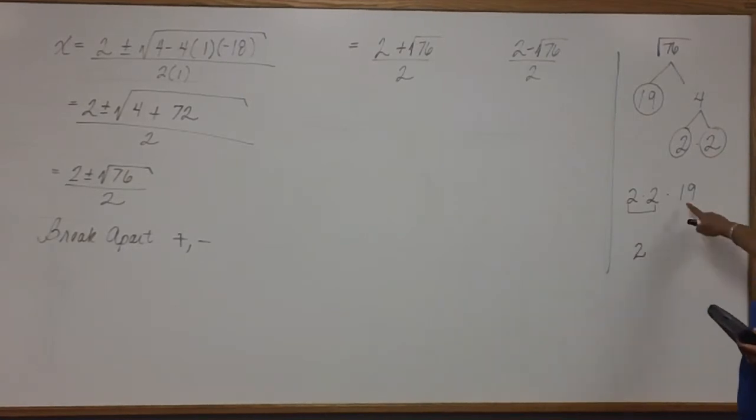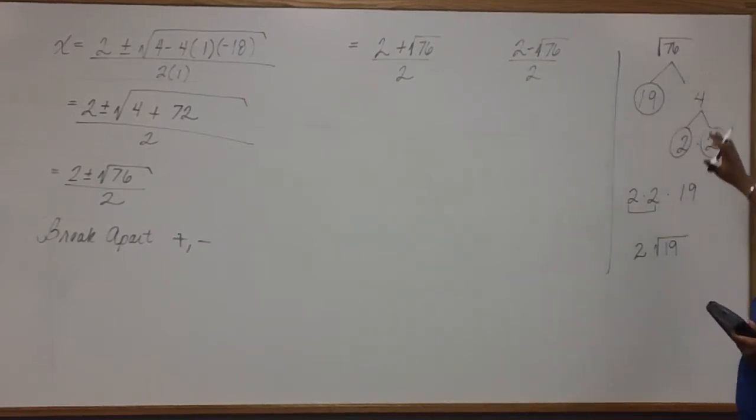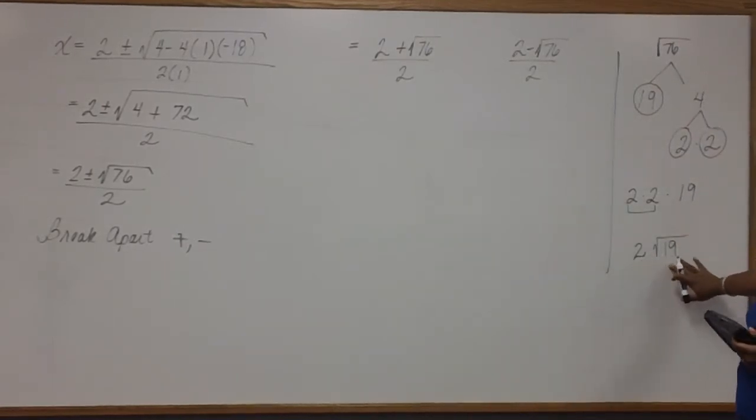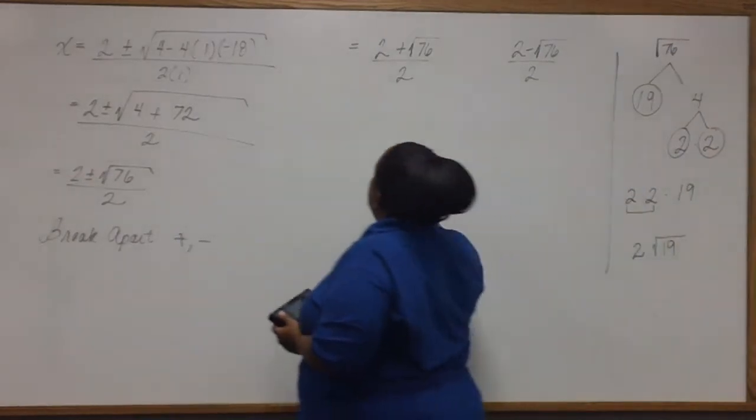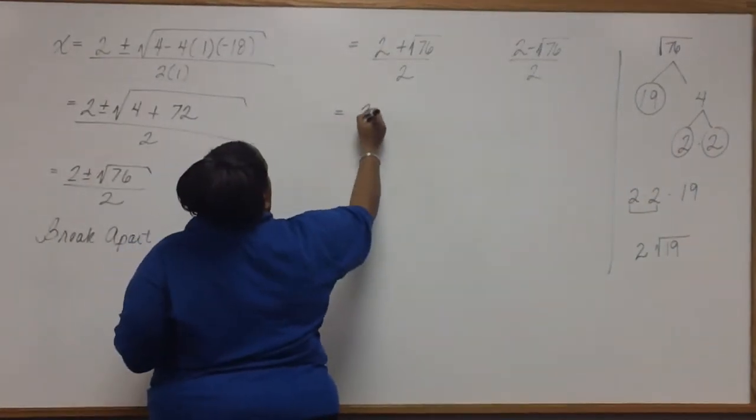But because there's not another 19 to pair this one with, it will stay under the radical. So square root of 76 simplifies to 2 square root of 19. So that now we can write it like this.